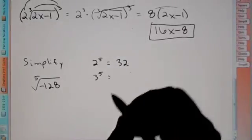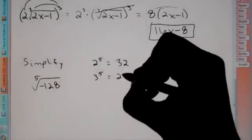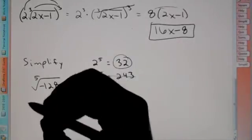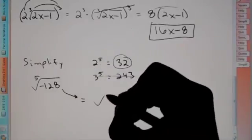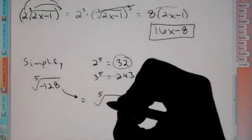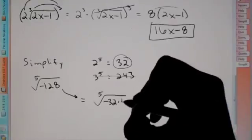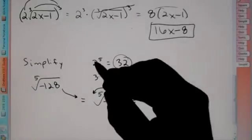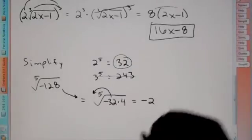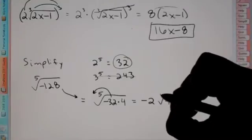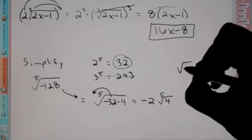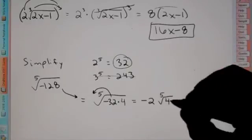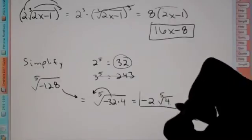3 to the 5th is 3, 9, 27, 81, 243 — way too big, so that won't work. But 32 is a factor of 128. So we can say this is equal to negative 32 times 4. What to the 5th power is negative 32? We take negative 2 out, leaving the 5th root of 4 on the inside. We've been taught to break down 4 using square root, but here we have an index of 5, so we can't break 4 down further. That's your final answer.